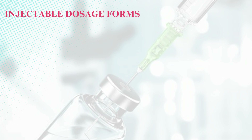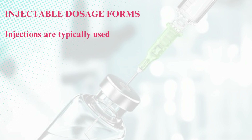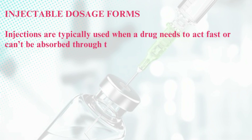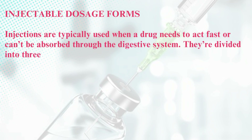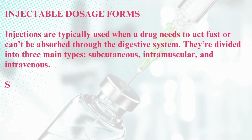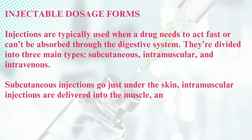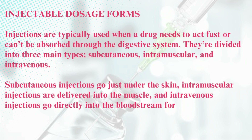Injectable dosage forms — injections are typically used when a drug needs to act fast or can't be absorbed through the digestive system. They're divided into three main types: subcutaneous, intramuscular, and intravenous. Subcutaneous injections go just under the skin, intramuscular injections are delivered into the muscle, and intravenous injections go directly into the bloodstream for the fastest effect.